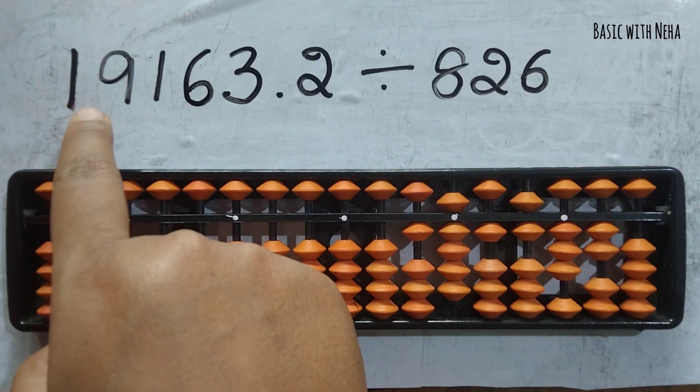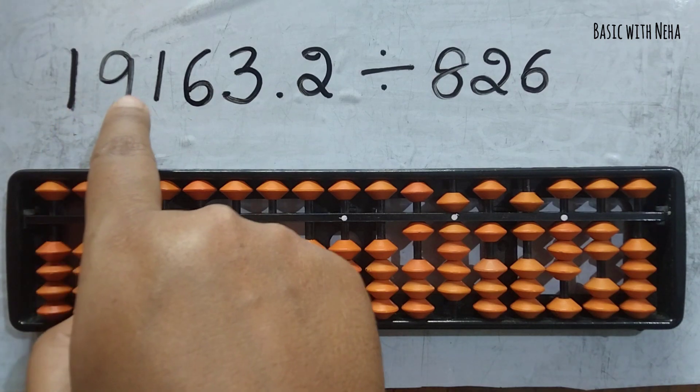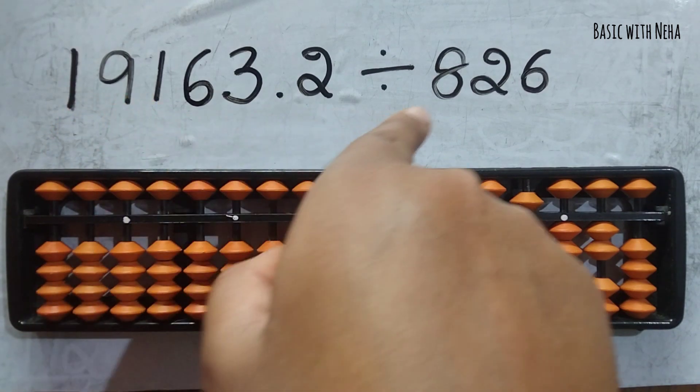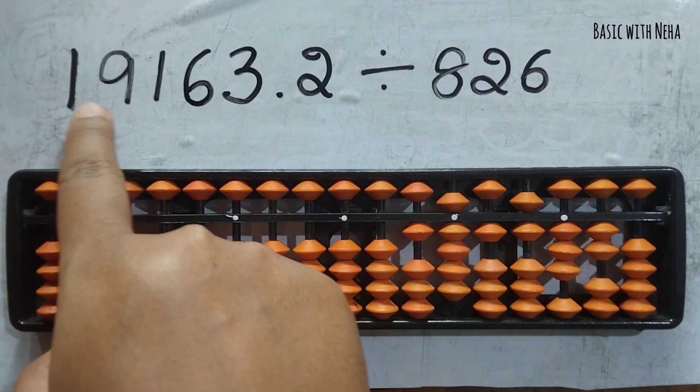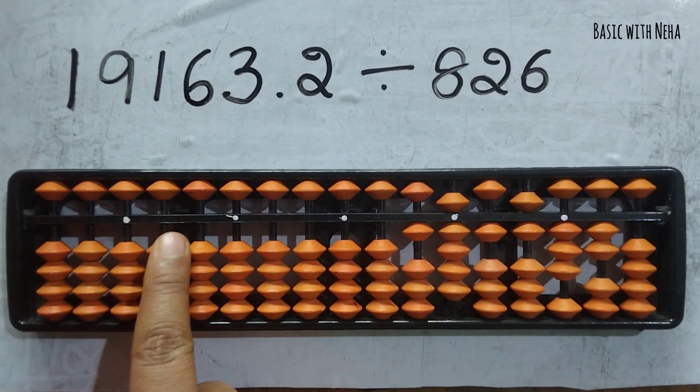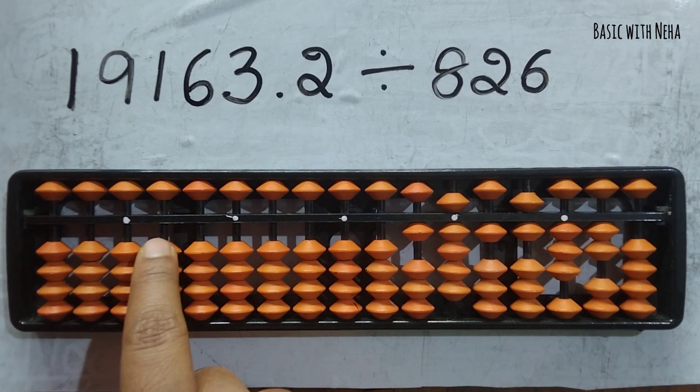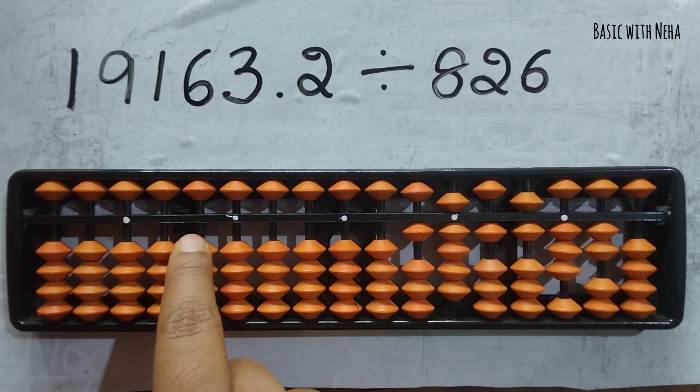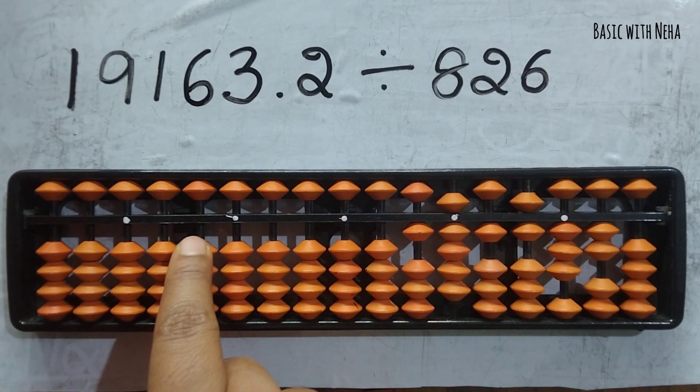I have a three-digit divisor, 826. If I look at three digits here, it's 191, which is much smaller than 826. So if I take three numbers and jump one, two, three, my answer will come here, but it's still not going to work out. I'm going to take the fourth number, so my answer will come here and I'll consider 1916 completely.